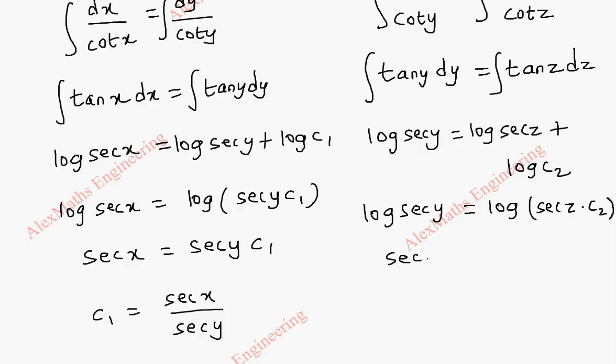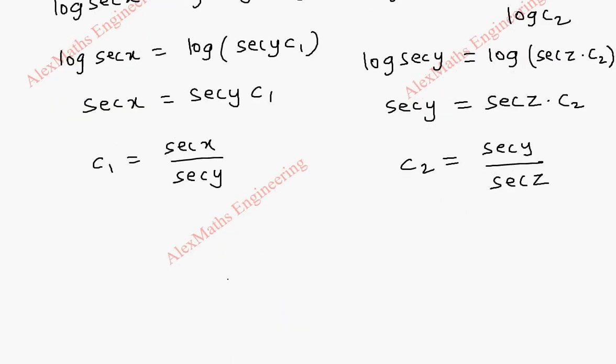we get sec y is sec z into c2. So c2 is sec y by sec z. Now this is our u and v. u is sec x by sec y.